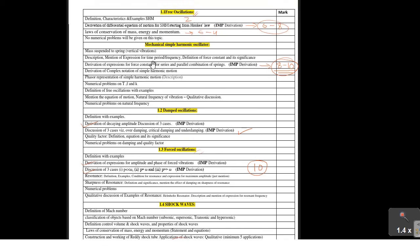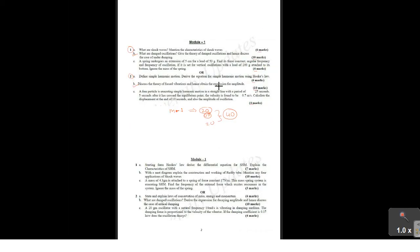So from Module Number One, either damped oscillation or forced oscillation derivation is fixed, along with shock waves and the two chapters — free oscillation and mechanical simple harmonic oscillator. The question paper for this module has 40 marks divided into 20 plus 20, so you need to write for only 20 marks. Let me show you this here.